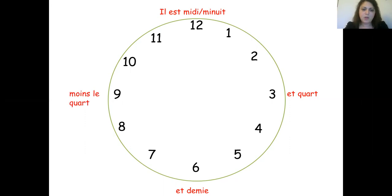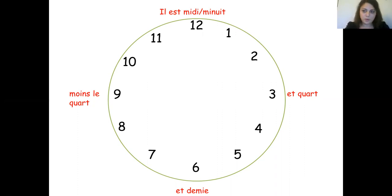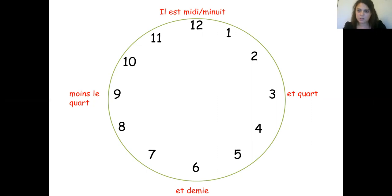Then when we're on the side from six to twelve, we're going to say minus and then the number. So instead of 'et quart' or 'et demi', here to say quarter to two it's literally minus a quarter: 'moins le quart'. So 'il est une heure moins le quart' is quarter to one, and 'il est deux heures moins le quart' is quarter to two — two hours minus the quarter.